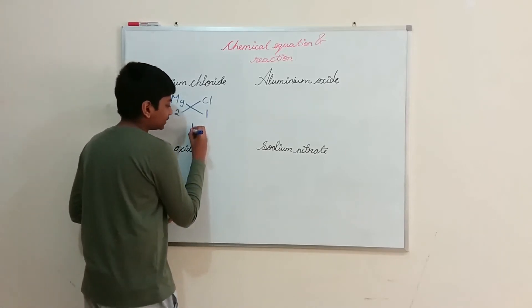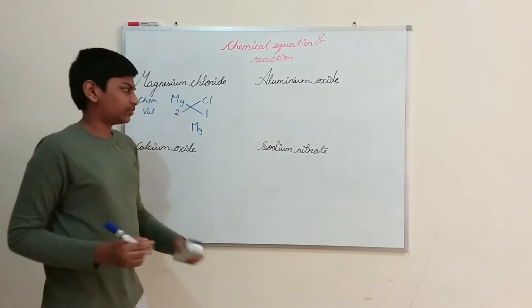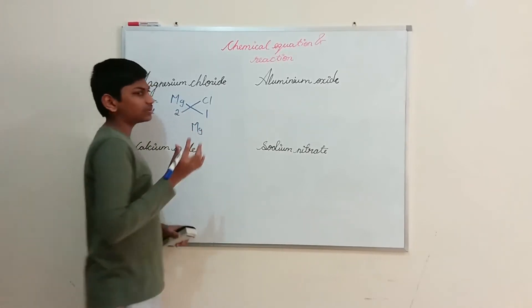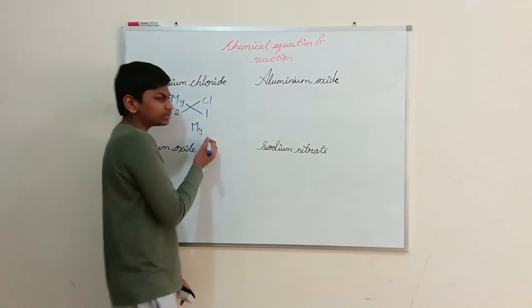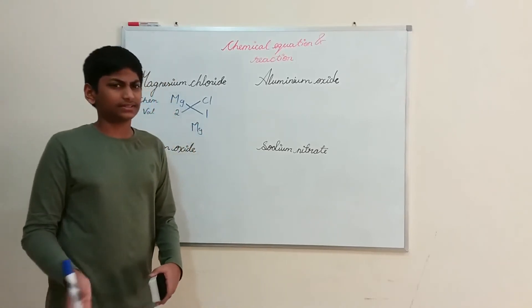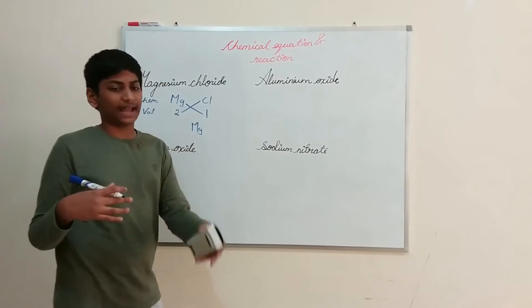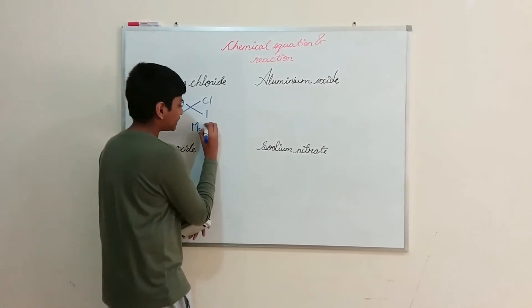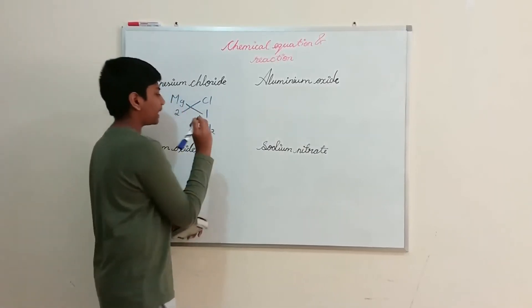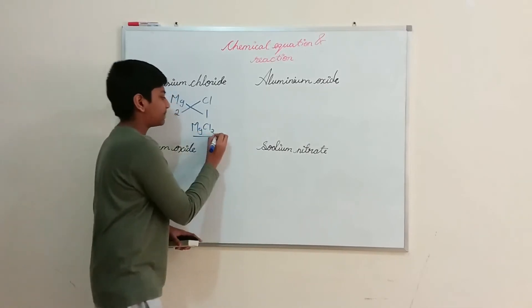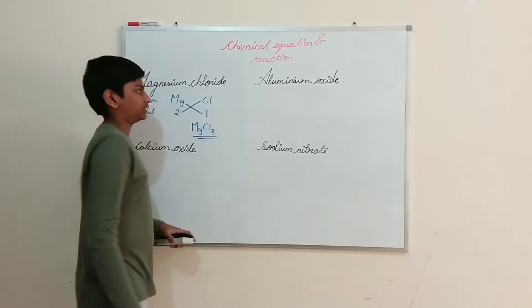We need to write 1 at the bottom of Mg, but since 1 is implied, there's no need to write it. And Cl gets a subscript 2 at the bottom. So the formula is MgCl₂. This is magnesium chloride. This is how to find it. Now pause the video, do all the examples, then unpause. I am going to reveal the answers.